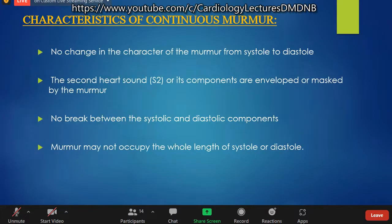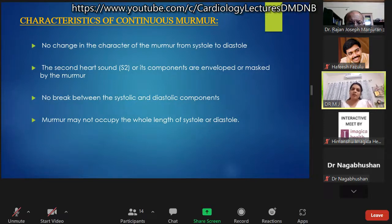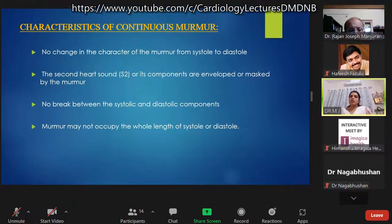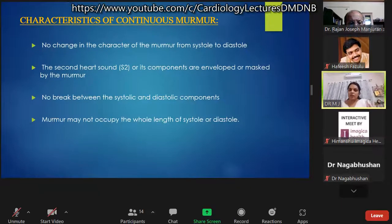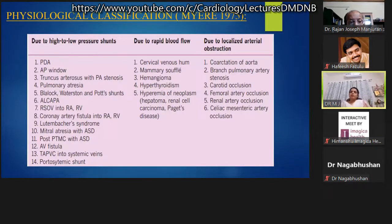Characteristics of continuous murmurs include: no change in character from systole to diastole; the second heart sound or its components are enveloped or masked by the murmur; no break between systolic and diastolic components; and the murmur occupies the whole length of either systolic or diastolic phase. Continuous murmurs were physiologically classified by Meyer in 1975.